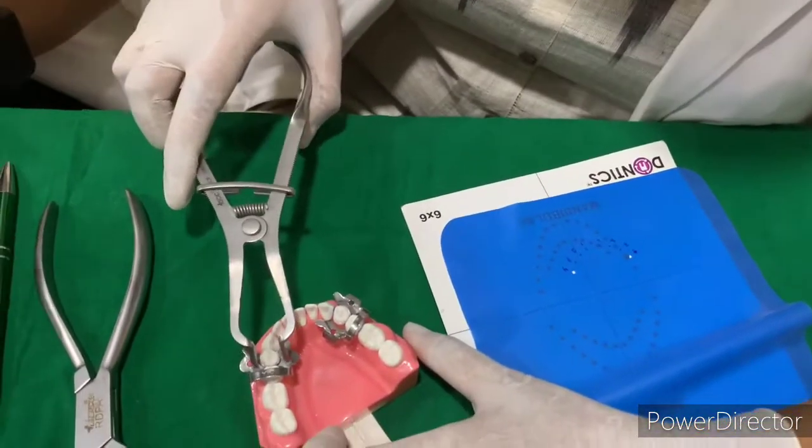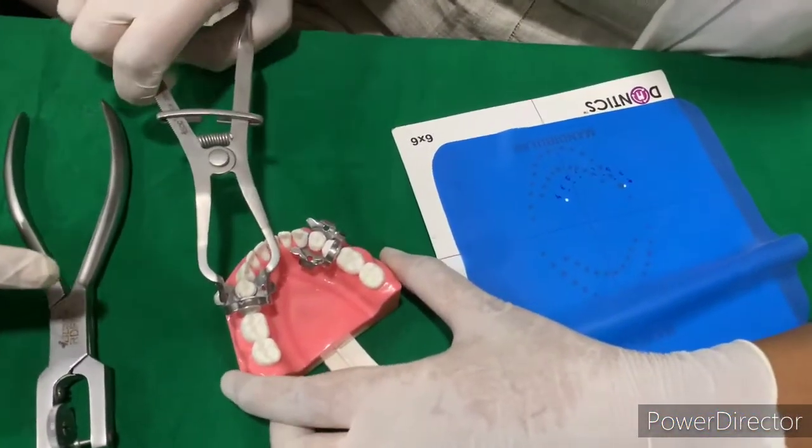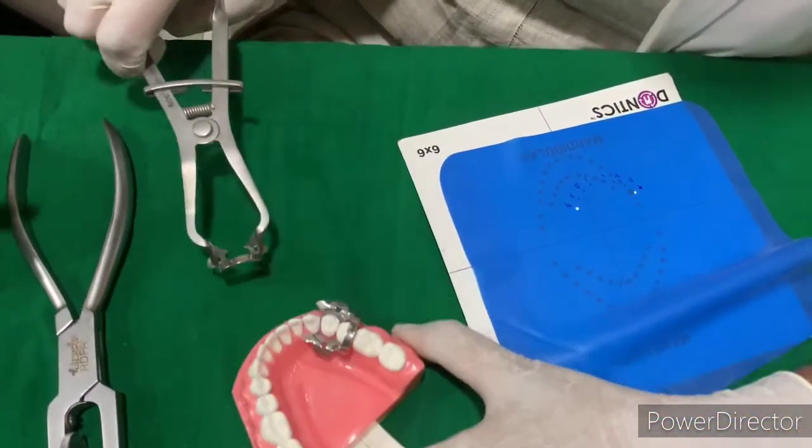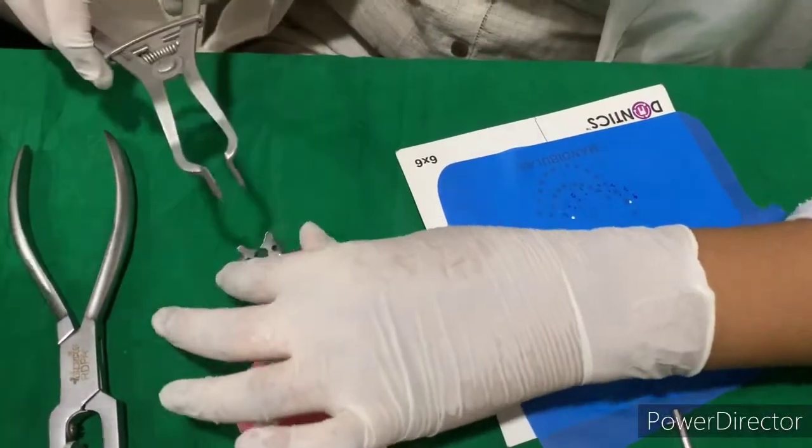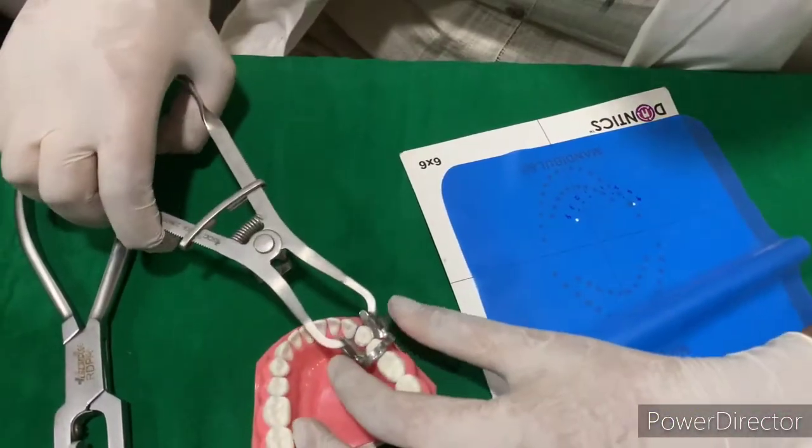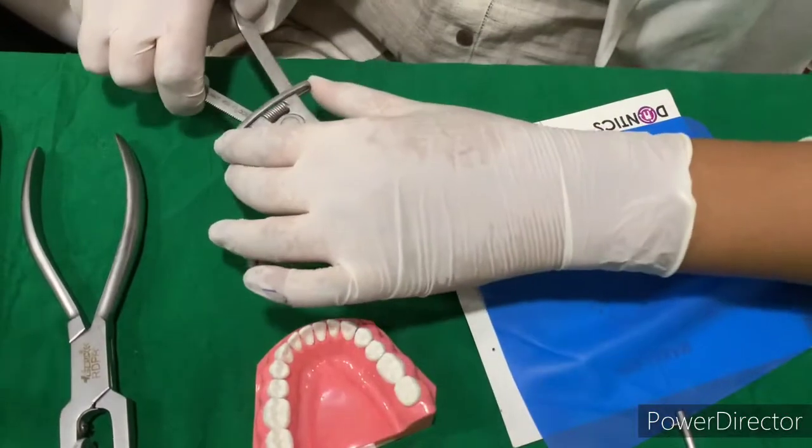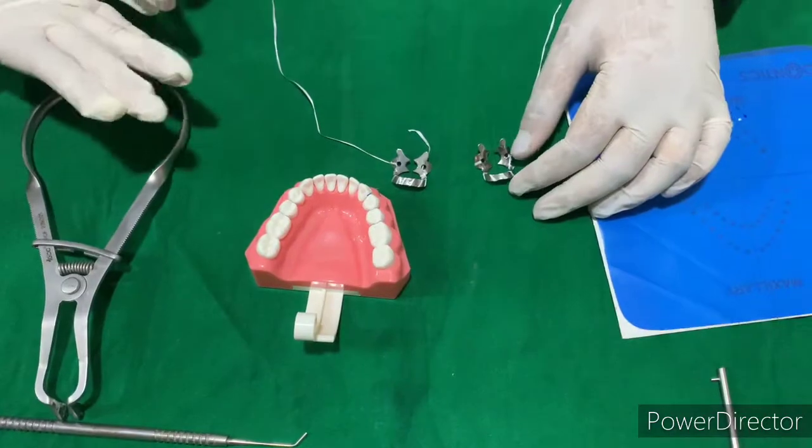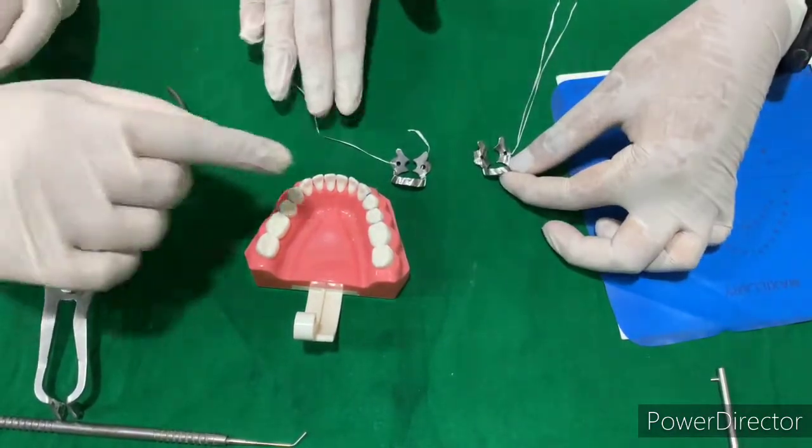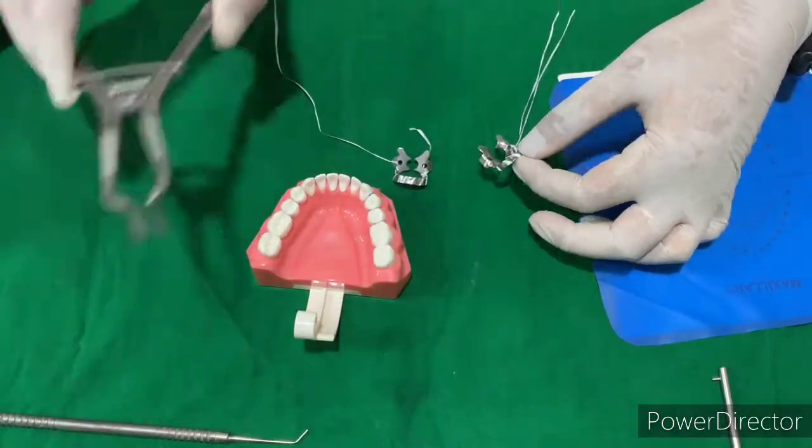Now we'll take the clamp. It's selected now. We'll floss it, then place the clamp and the dam together. Now the flossing is done for the clamps. We'll place the dam and the clamp together.